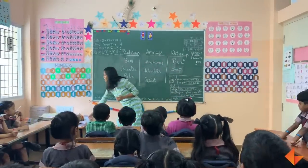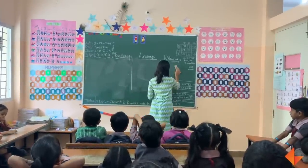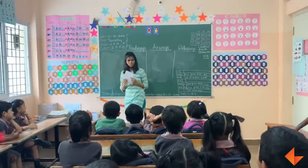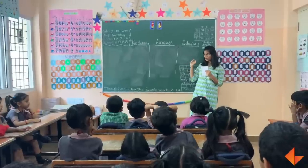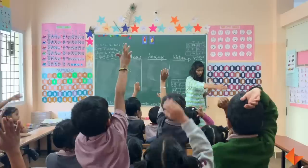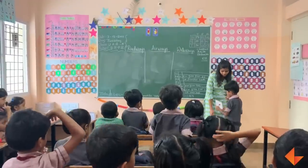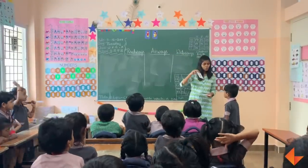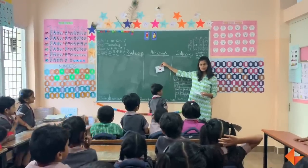Now we are going to play a game. I will erase this. I will show some flashcards and you have to tell me whether the vehicle is roadways, airways, or waterways. Who wants to try? Can you pick a card? This is a helicopter. Where will it come — roadways, airways, or waterways? Airways. Very good, this is airways.